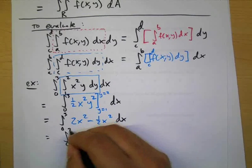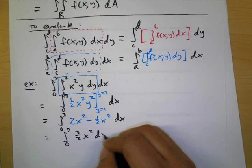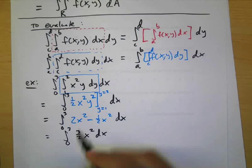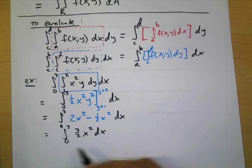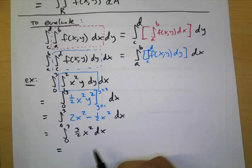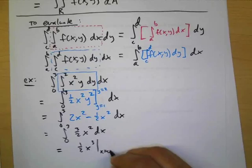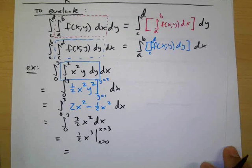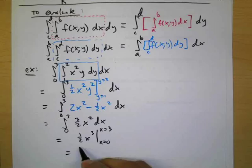Which let's just clean it up that's the same as three halves x squared dx, so we've gone from a double integral now it's just a normal integral. So the integral of three halves x squared would be what? One half x cubed from x equals zero to three. Plug in your bounds, what do we get? Twenty-seven halves.